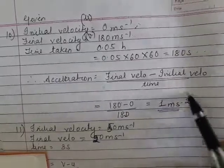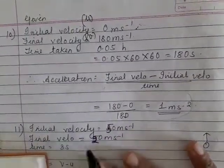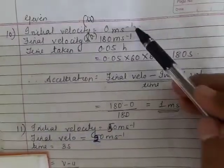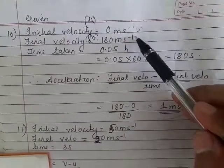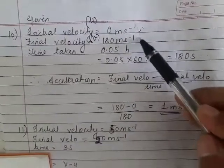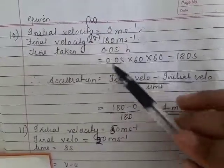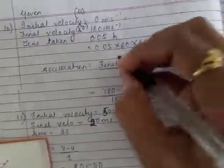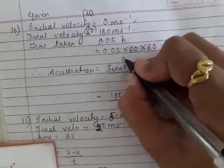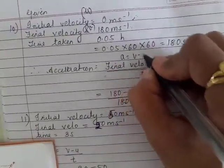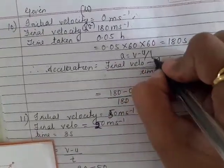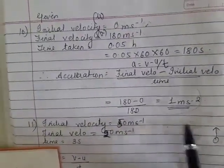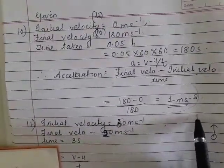This is the unit for acceleration — 1 meter per second squared. Initial velocity is 0, final velocity is 180 m/s, and time converted to seconds is 180 s. Substituting into a = (v − u) / t gives 1 m/s².